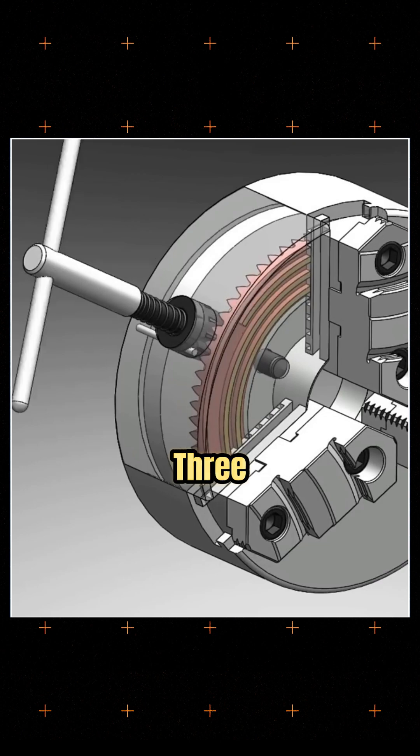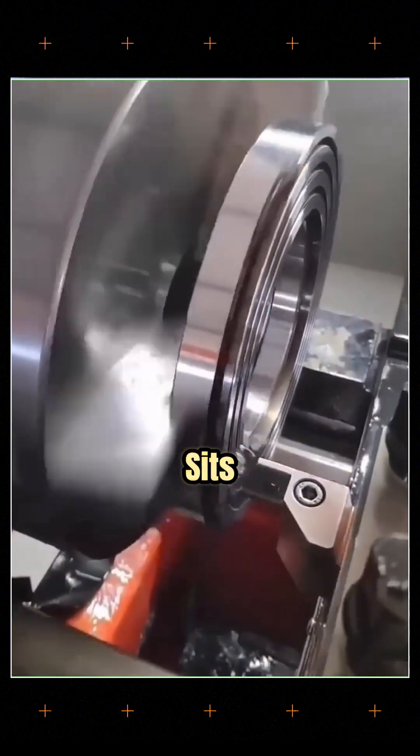By turning one of the three outer gears, you're actually rotating a larger central one. And on it sits a spiral plate.